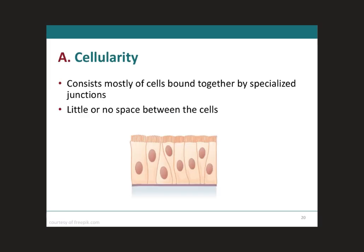The first characteristic is cellularity. Cellularity means that there is little or no space between the cells, and this is due to the specialized cell junctions that we already talked about. Therefore, cell junctions are responsible for giving this characteristic of cellularity. As you can see in this image, there is really no space between the adjacent cells.